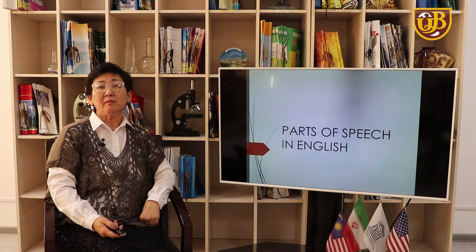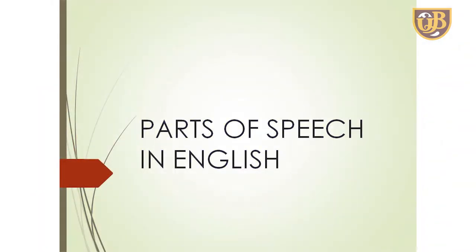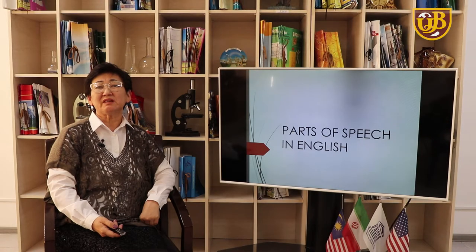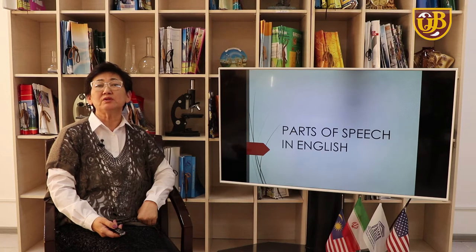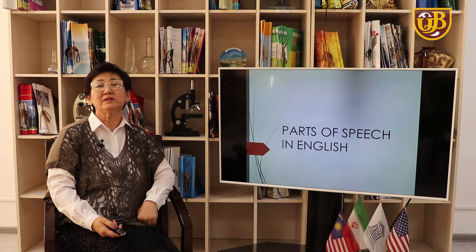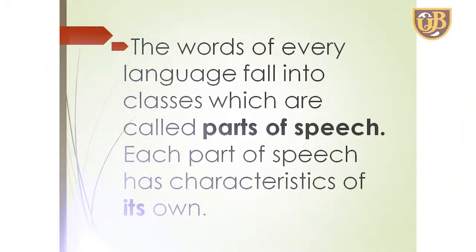What is grammar? Grammar helps you to listen, speak, read and write academic English properly. Grammar is the system of a language. People sometimes describe grammar as the rules of a language, but in fact no language has rules. If we use the word 'rules,' we suggest that somebody created the rules and only then spoke the language, like a new game. As it is used today by many teachers and learners, grammar is loosely understood to be a set of rules that govern the language.